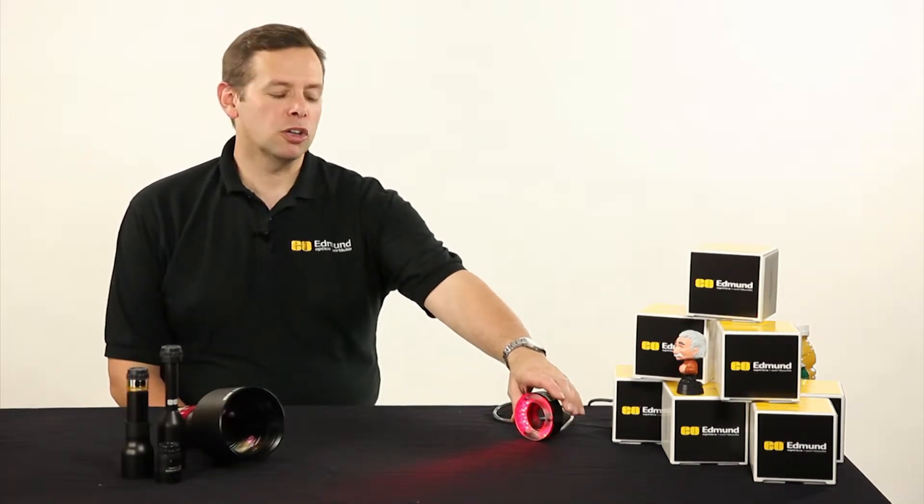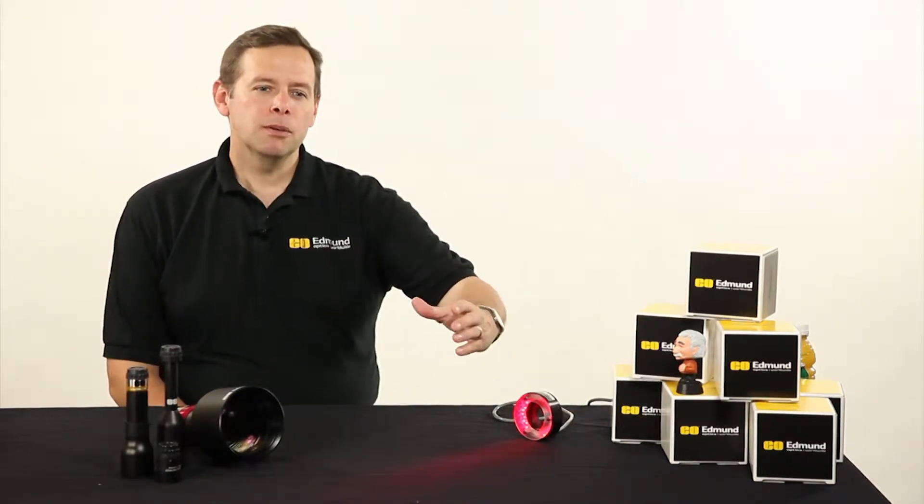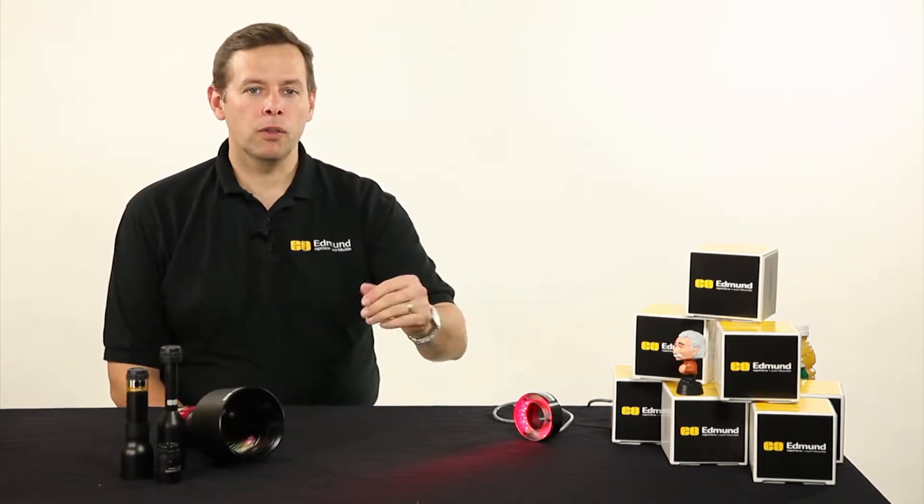In the last segment, we talked about things that were directional illumination, being spotlights and bar lights, generally coming from one direction all the time.